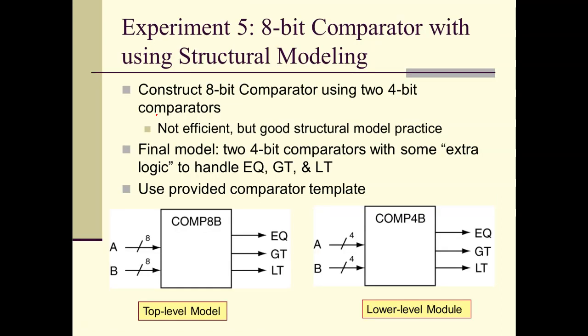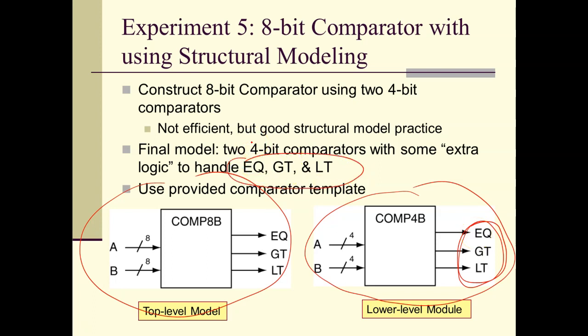This is experiment 5. Once again, this is what we're looking for in our final circuit, but we're going to build it out of two of these. You'll see that you're going to have two sets of these equations right here that you're going to have to write a module to generate the final three outputs of the 8-bit comparator. The trick is generating this extra module here.